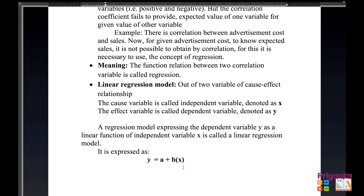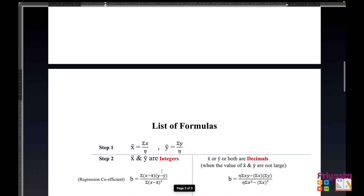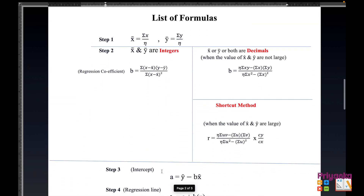The linear regression model is expressed as ŷ = a + bx. In this regression model, the first step is to find b and the second step is to find a, as shown in the least squares formula. Here are the steps given in the formula reference.